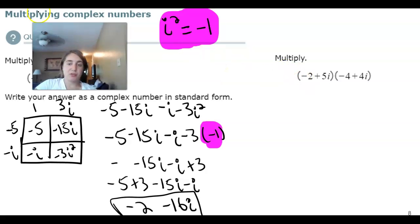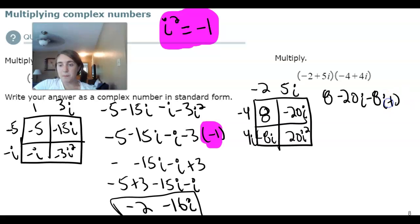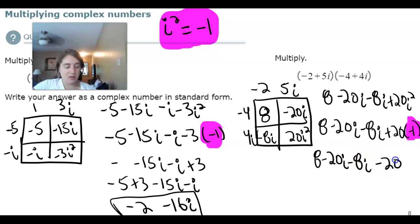Go ahead and pause your screen. Try this on your own. You can do foil or box. I'm going to go ahead and do box. Negative 2, 5i, negative 4, 4i. So, we have 8 minus 20i plus 8i minus 20i squared. And remember that my i squared becomes a negative 1. Good job. See you next time.